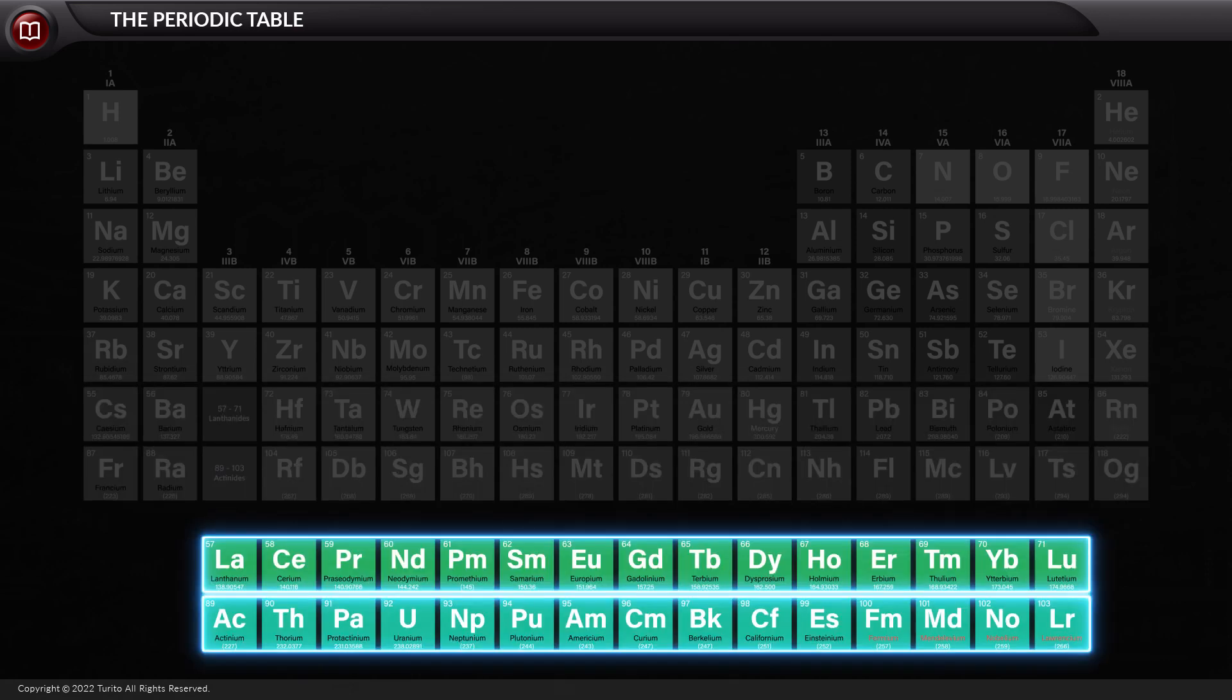Now, can you see that there are two more rows below the main body of the periodic table? Below the main body of the periodic table lies the two more rows, which have lanthanides and actinides as part of the sixth and seventh periods, respectively.